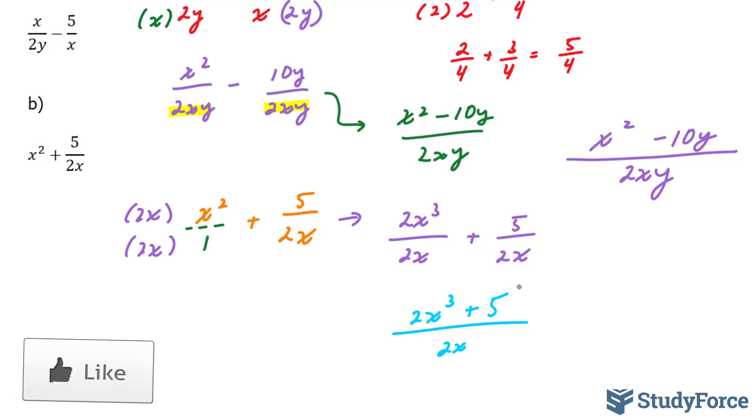Before we conclude, remember, this question could have been done the exact same way as the second method. You could have multiplied this 1 by this 5, and this 2x by this term, and then multiplied the denominators, and you would have ended up with the same solution.